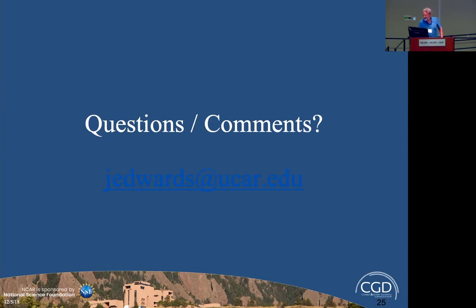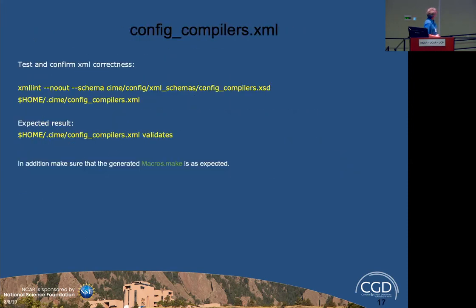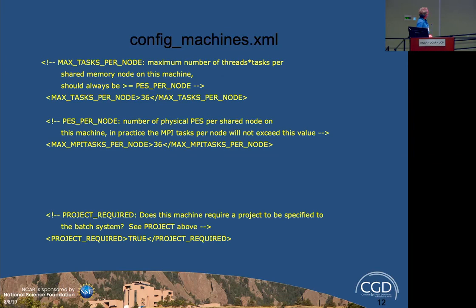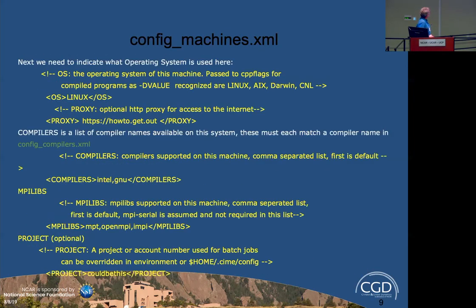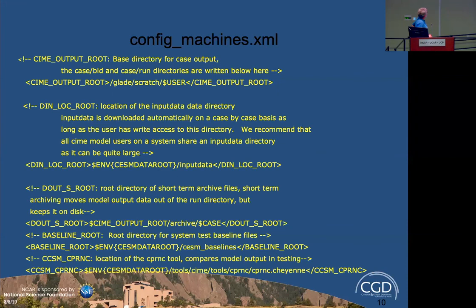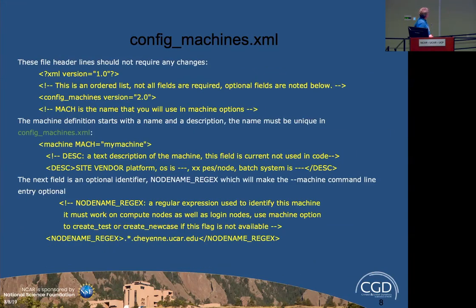Question from the audience: Can you go back to the config machines slide, specifically to the node name regex? If I specify the machine as my machine in create_newcase with '--machine equals whatever', do I not need the node name regex? Answer: Correct — if you specify '--machine equals whatever', then you don't need the node name regex. The node name regex is only needed for automatic identification.